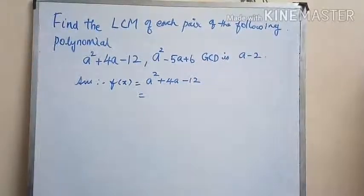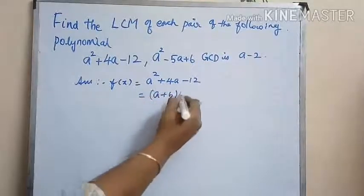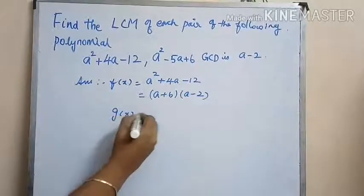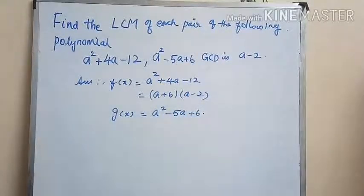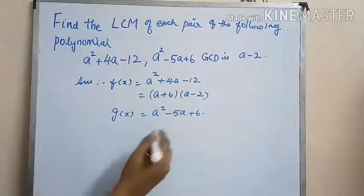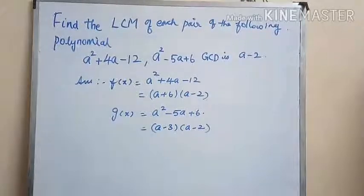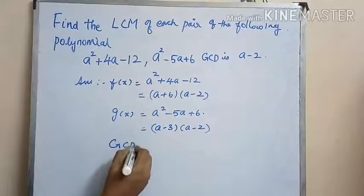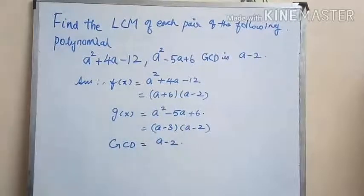f(x) can be factorized as (a plus 6) into (a minus 2). And g(x) is equal to a squared minus 5a plus 6, which can be factorized as (a minus 3) into (a minus 2). The GCD of these polynomials is given to be (a minus 2).